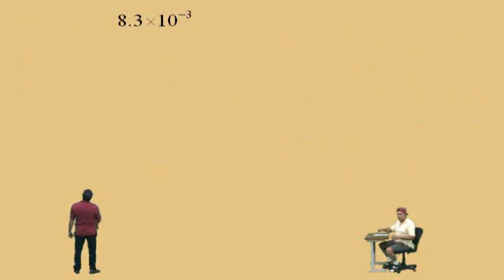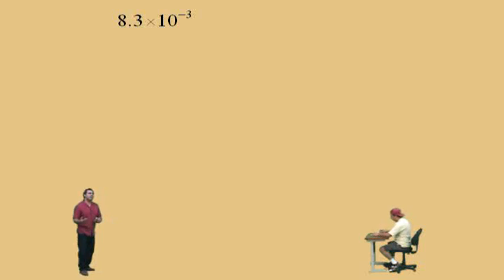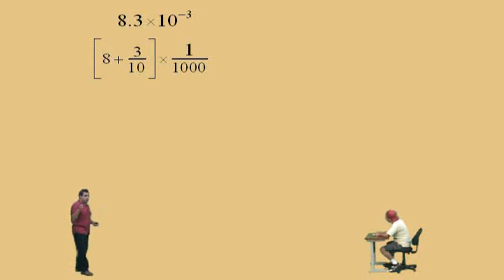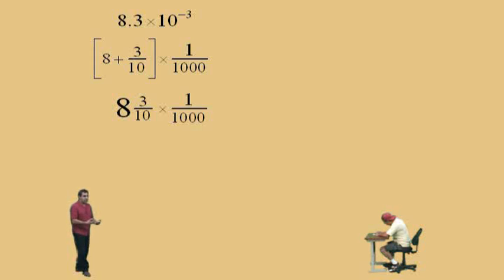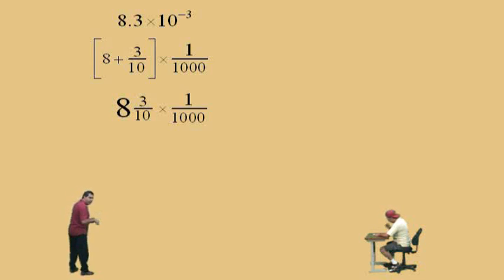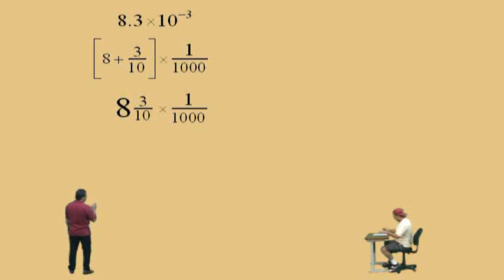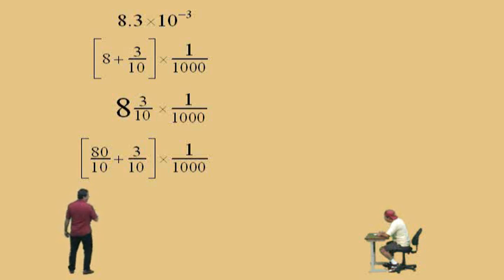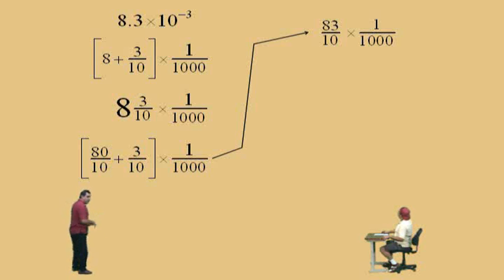Let's look at 8.3 times ten to the negative three in mixed number format. Eight point three is eight plus three tenths times one over a thousand. Eight and three tenths is a mixed number — it simply means eight plus three tenths. To see why the pattern works: using a common denominator, eight equals eighty over ten, and eighty tenths plus three tenths is eighty-three tenths. That's why ten times eight is eighty — there are eighty tenths — and you add three to get eighty-three tenths.